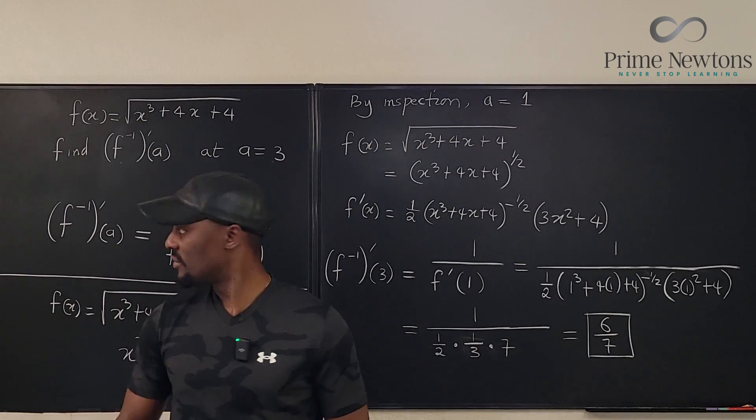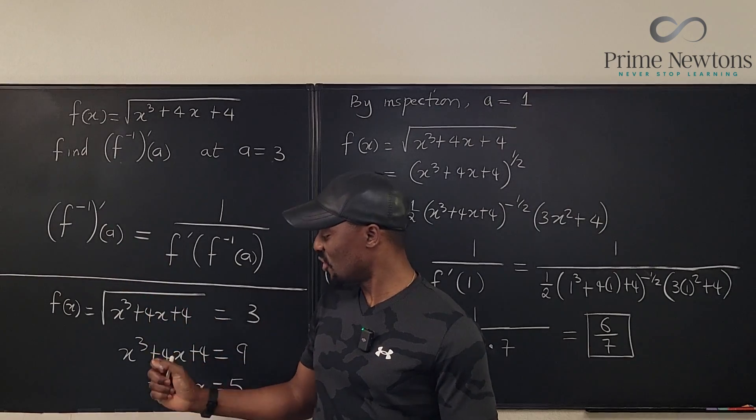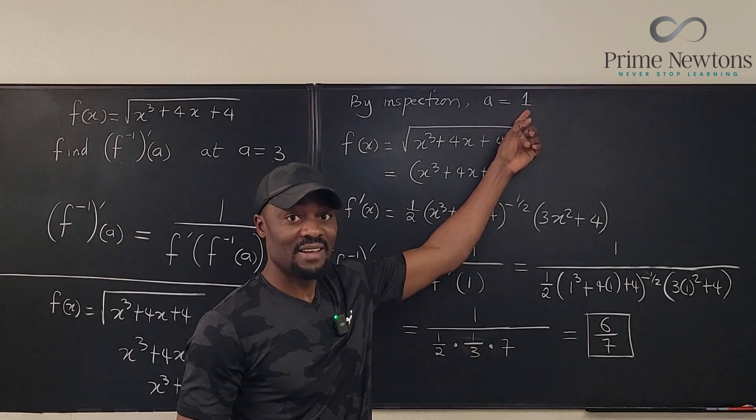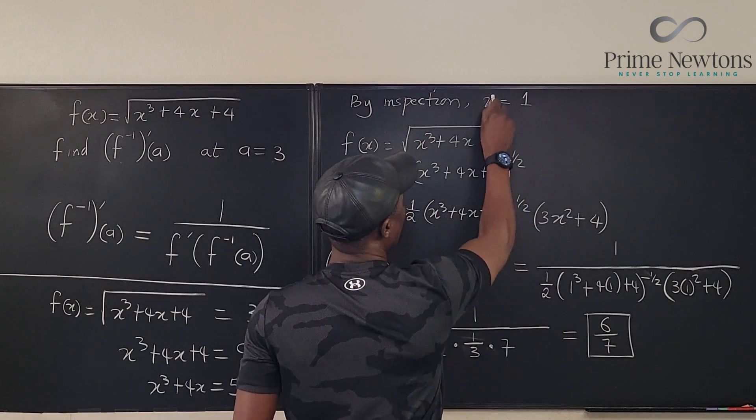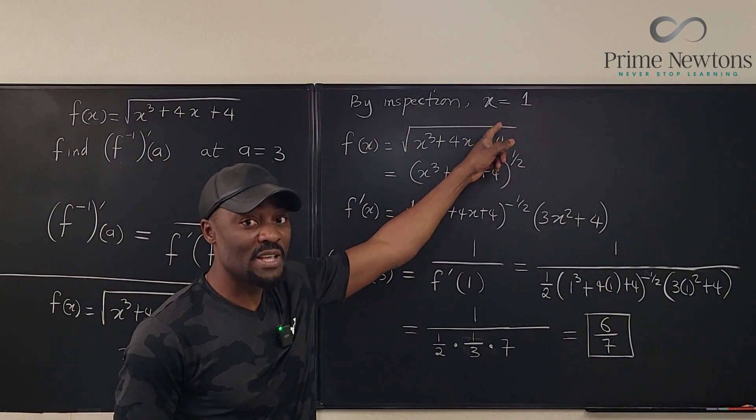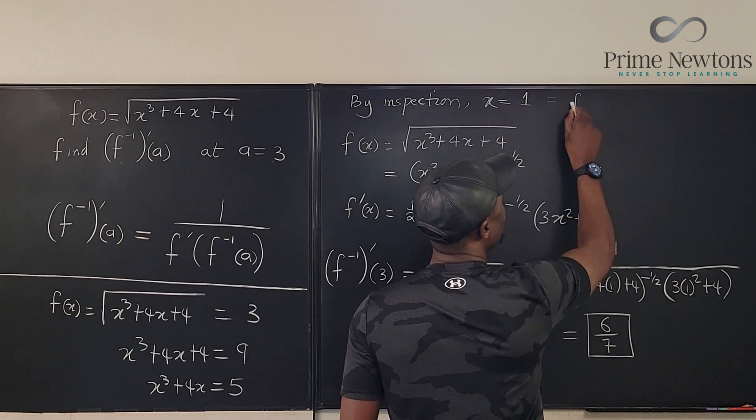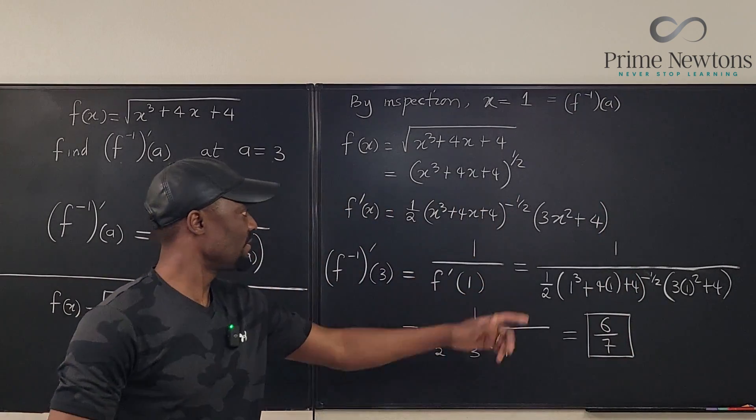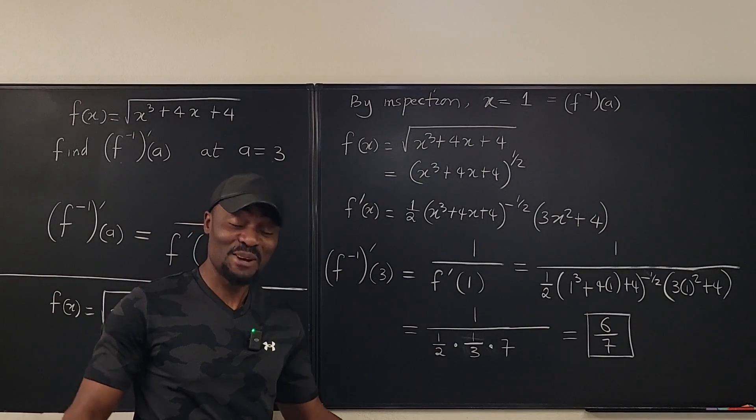The most important part was the formula you need to recall or memorize in case you never learned it. You need to know how to find x from a. By inspection, x is equal to 1. And that x equals 1 is our f inverse of a. And then use the formula and get your answer. Never stop learning. Because those who stop learning, stop living. Bye-bye.